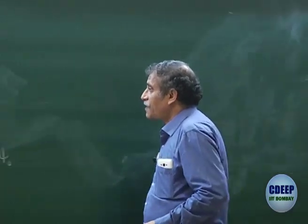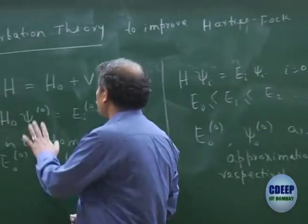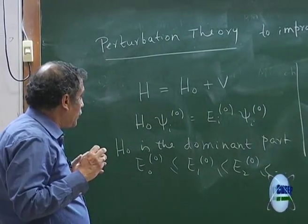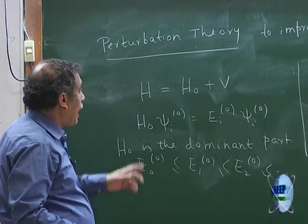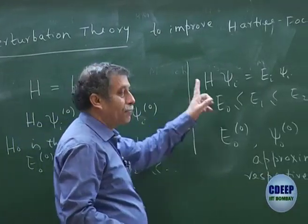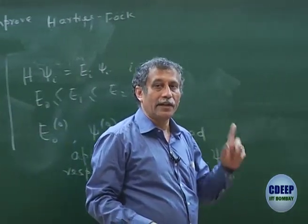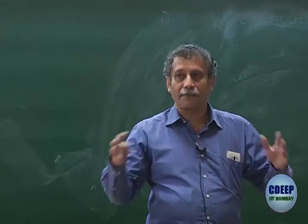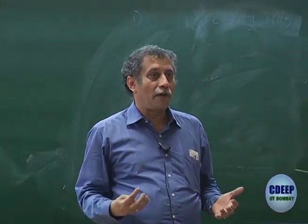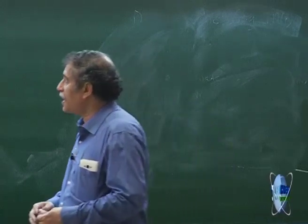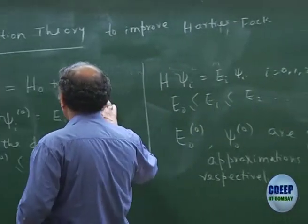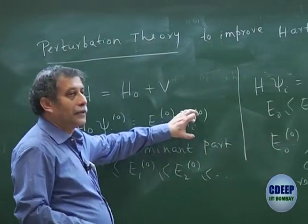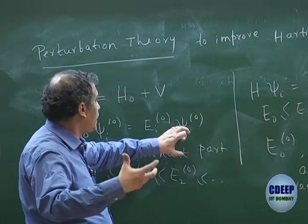Right now my first task is to have a Hamiltonian split into H₀ plus V. When you do that, we notice that we have a wave function which is a pretty good approximation to the exact wave function — we already have a wave function, and that is the Hartree-Fock wave function. So can I make the Hartree-Fock wave function the ground state wave function of some Hamiltonian? Can the Hartree-Fock determinant be a ψ₀⁰?